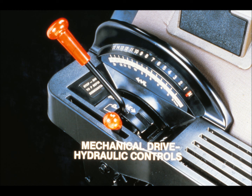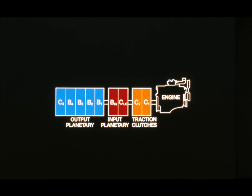We'll point out the major components in the control circuit and show you what their internal parts look like. We'll also describe what each component does. By the time you're finished with this program, you should be able to identify the major components and briefly describe what each of them does. Let's begin with a look at how the hydraulic control circuit works with the mechanical components in the transmission.